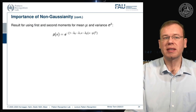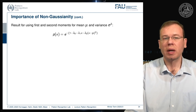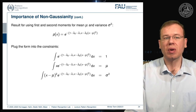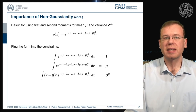For first and second moments given by mean μ and variance σ², the solution takes the form p(x) ∝ exp(−(1 − λ0 − λ1·x − λ2·(x−μ)²)). Plugging into the constraints gives three conditions: the integral over all x equals 1, the first moment equals μ, and the second moment equals σ². Solving for the Lagrange multipliers yields λ0 = 1 − ½ log(2πσ²), λ1 = 0, and λ2 = −1/(2σ²).